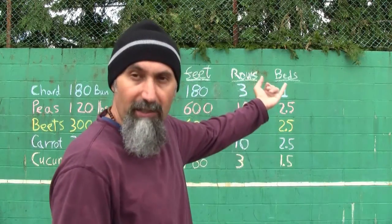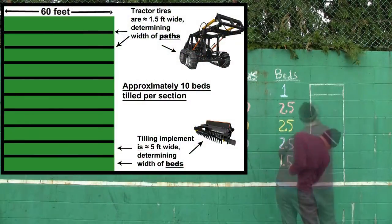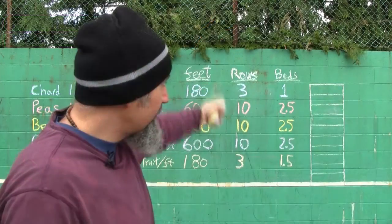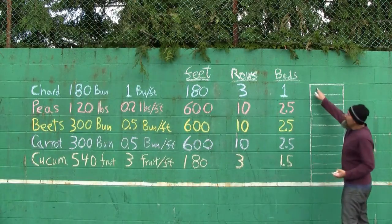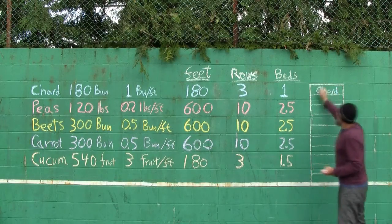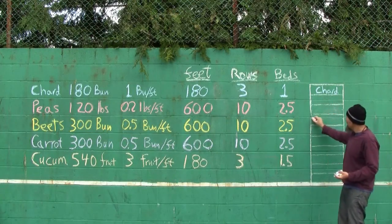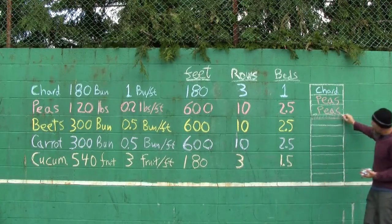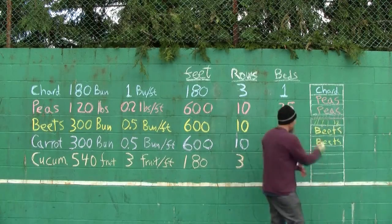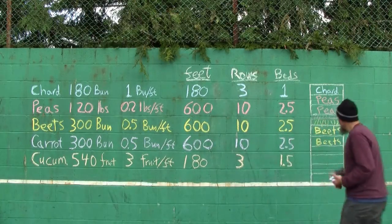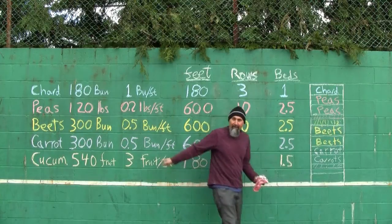Now we can draw our section — this is our blank slate. We take the number of beds and fill up our space to visualize what the field is going to look like. So we have 1 bed of chard, 2.5 beds of peas, 2.5 beds of beets, 2.5 beds of carrots, and 1.5 beds of cucumber, each laid out in the section.